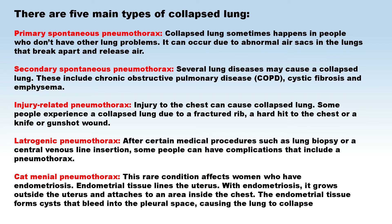Catamenial pneumothorax: this rare condition affects women who have endometriosis. Endometrial tissue lines the uterus. With endometriosis, it grows outside the uterus and attaches to an area inside the chest. The endometrial tissue forms cysts that bleed into the pleural space, causing the lung to collapse.